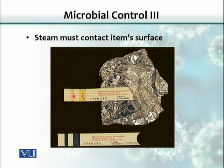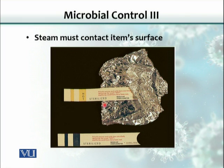There is also autoclave tape — a strip with words or lines engraved on it that are normally not visible. When the tape undergoes the required pressure and temperature of 121 degrees Celsius, those lines appear. This is used to monitor the sterilization process: if you don't see the change in the tape, the required temperature was not achieved and sterilization was not completed.